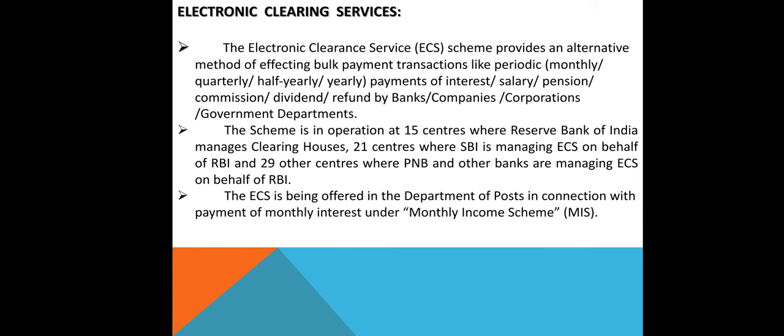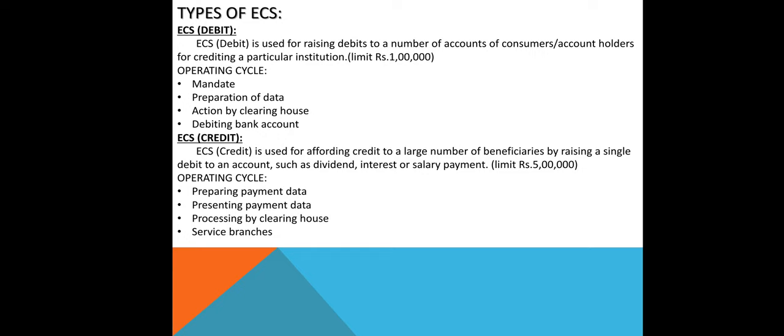The Electronic Clearing Service is also offered by the Department of Post in connection with the payment of monthly interest under the Monthly Income Scheme (MIS). Types of ECS include ECS debit and ECS credit. ECS debit is used for raising debits to a number of accounts of consumers or account holders for crediting a particular institution.